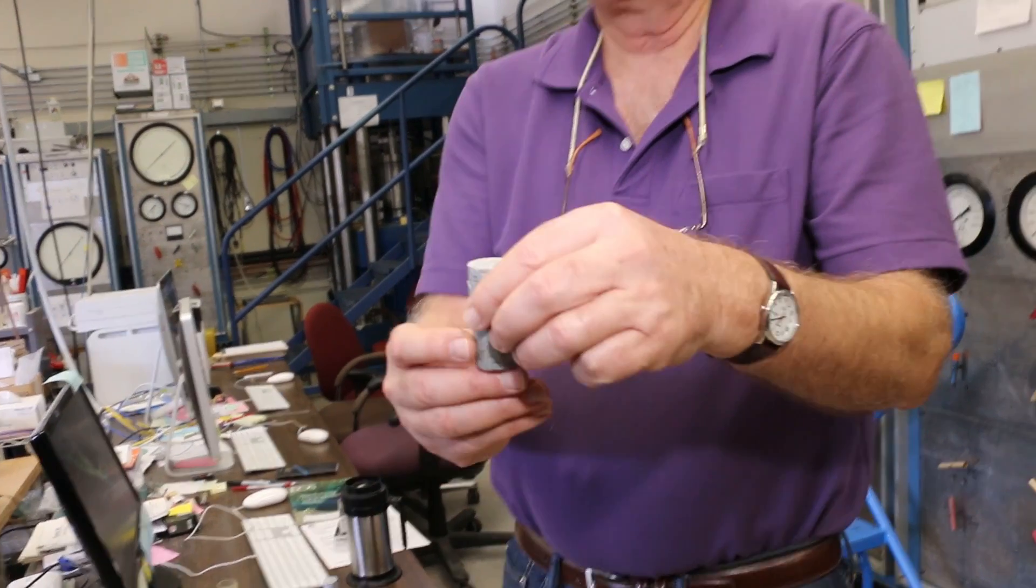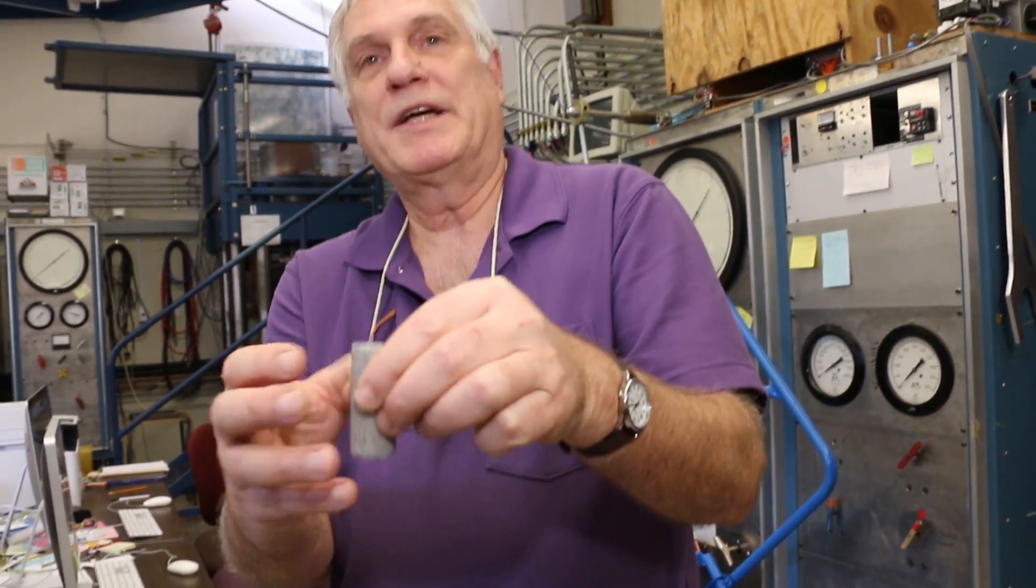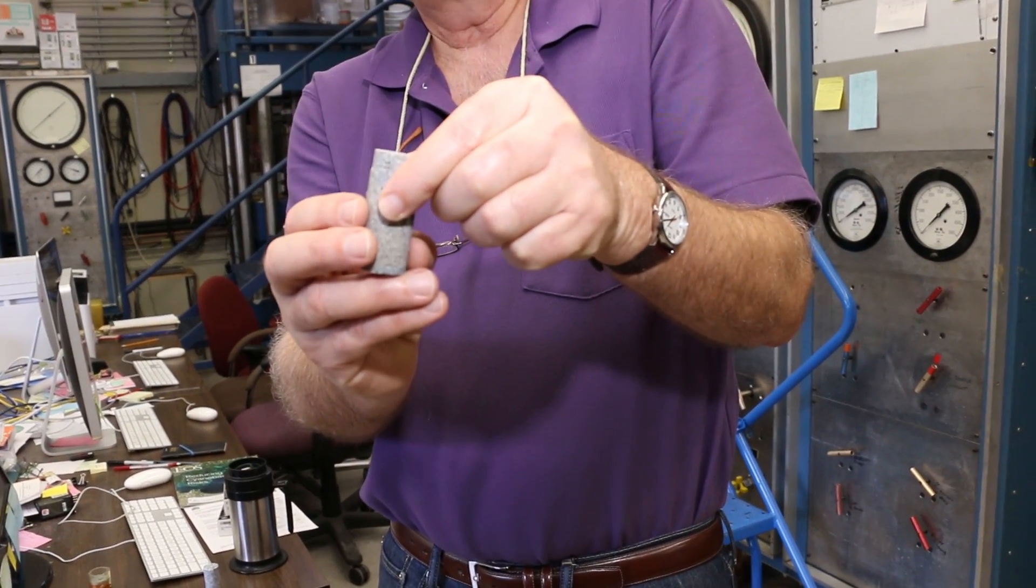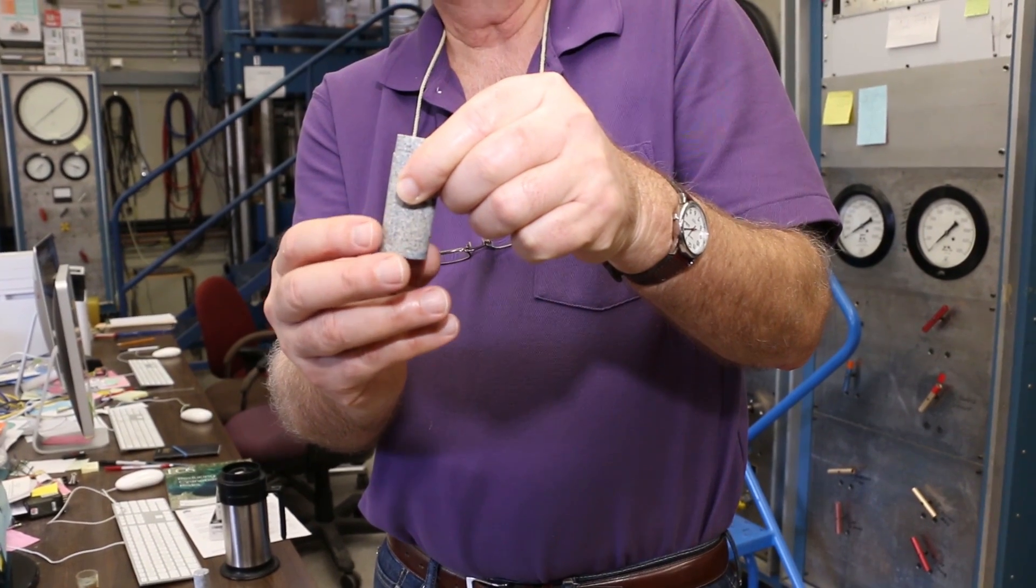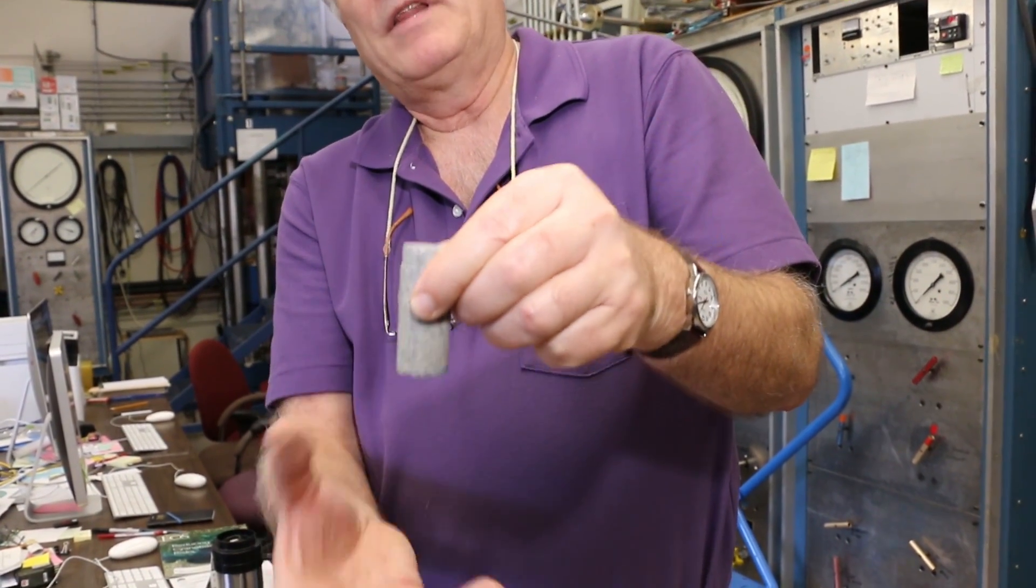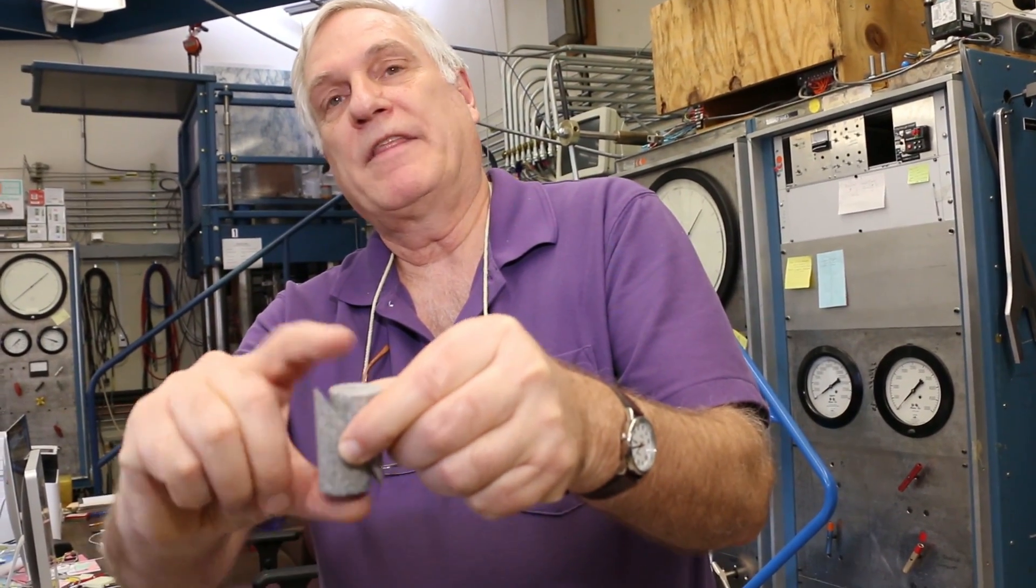So we put the sample together and we put it in a pressure vessel and apply confining pressure to squeeze it together, which is similar to how deeply the sample would be buried in the earth where the earthquake would nucleate. And then we push on the end of the sample and cause it to shear like that. And so that shearing would be motion on the fault surface that we want to recreate earthquake motion.